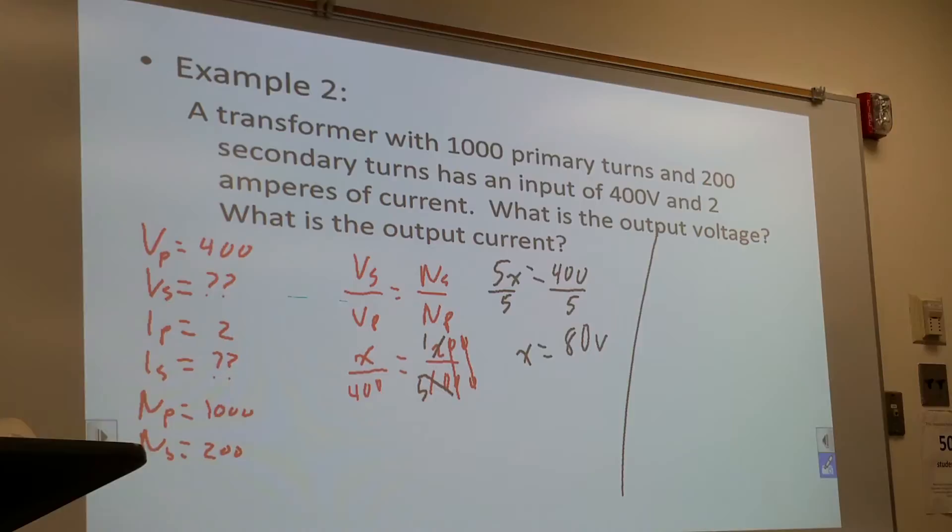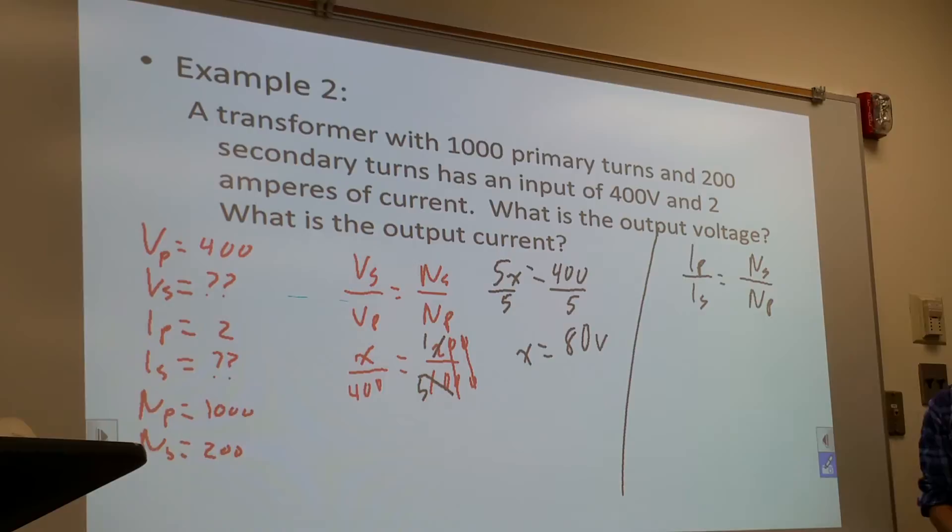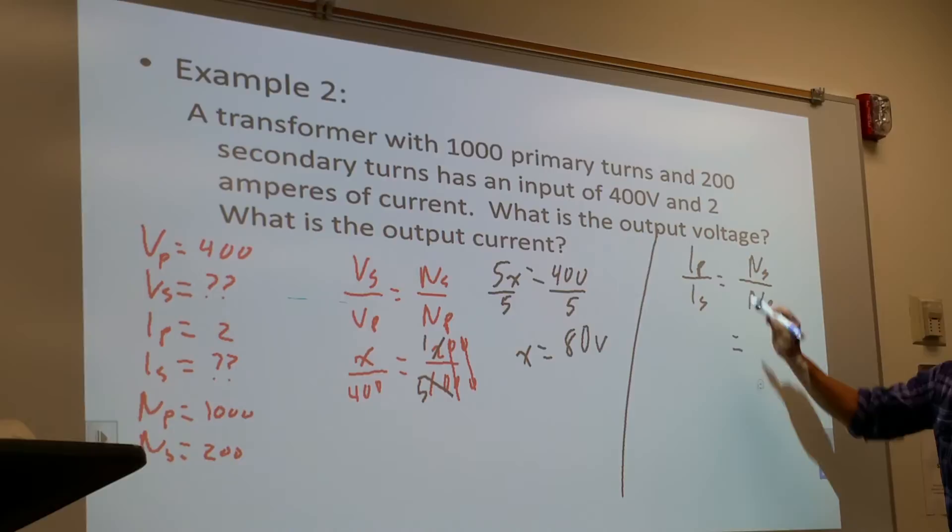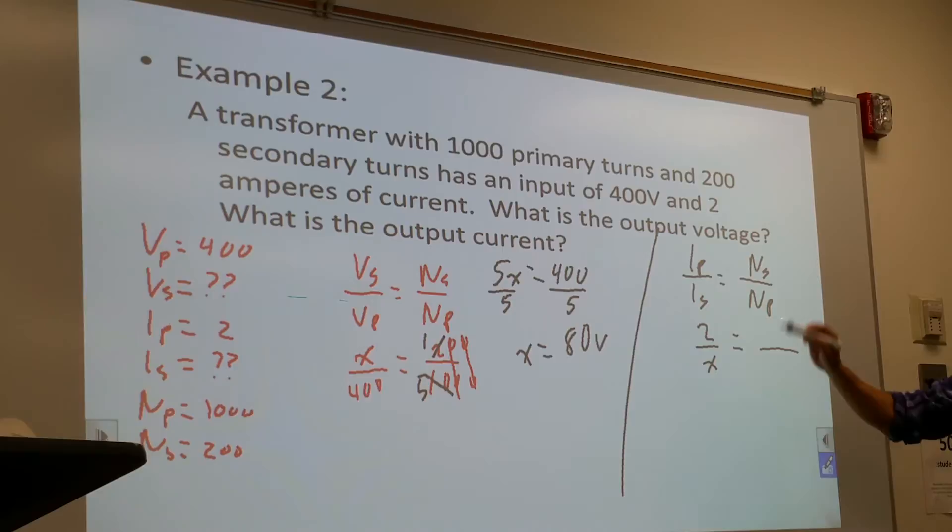Now we're going to solve for current, which is Ip over Is equals Ns over Np. Incoming current was given as 2. Output current is unknown. And Ns to Np is 1 to 5.